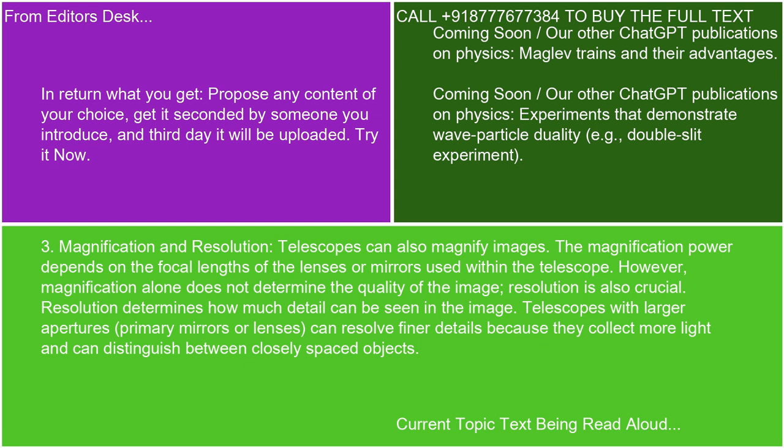3. Magnification and resolution. Telescopes can also magnify images. The magnification power depends on the focal lengths of the lenses or mirrors used within the telescope. However, magnification alone does not determine the quality of the image. Resolution is also crucial — it determines how much detail can be seen. Telescopes with larger apertures, primary mirrors, or lenses can resolve finer details because they collect more light and can distinguish between closely spaced objects.